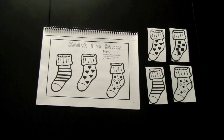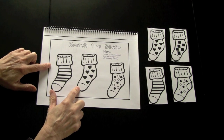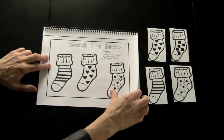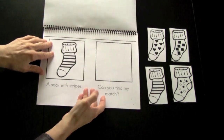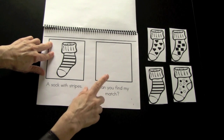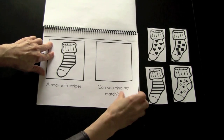In the sorting strand, the children will be required to sort socks. This is the emergent reader that corresponds to that activity and helps develop the concept. It's called Match the Socks. A sock with stripes. Can you find the match? The children will be required to cut and find the match and glue it on the page.